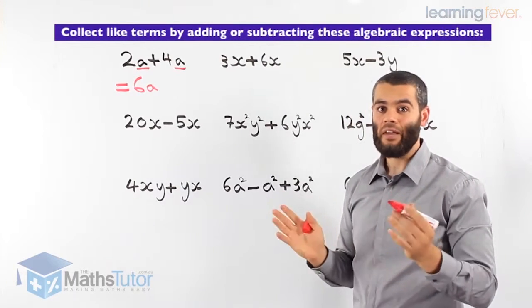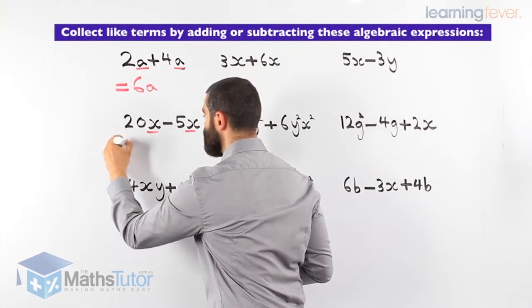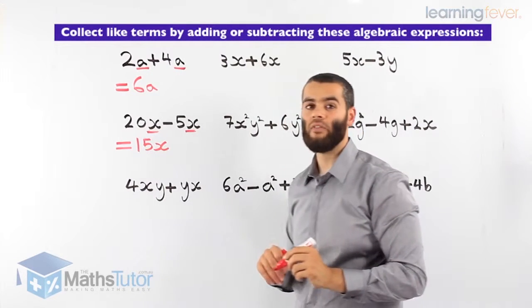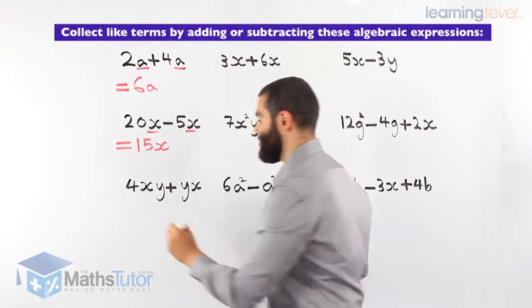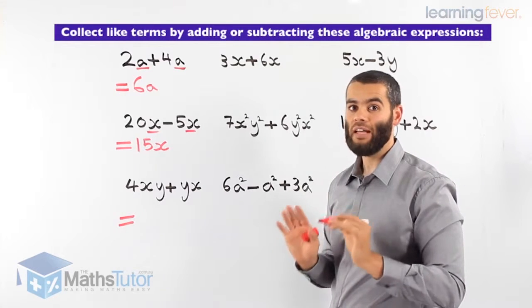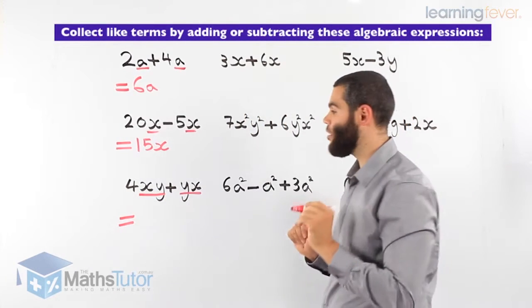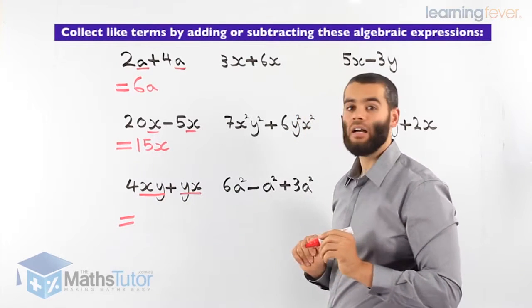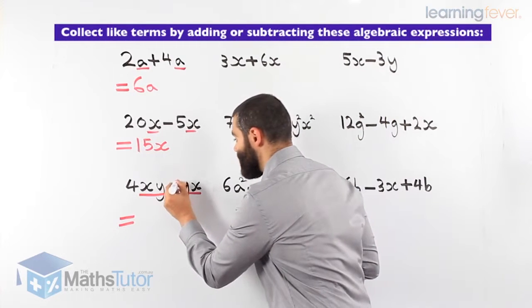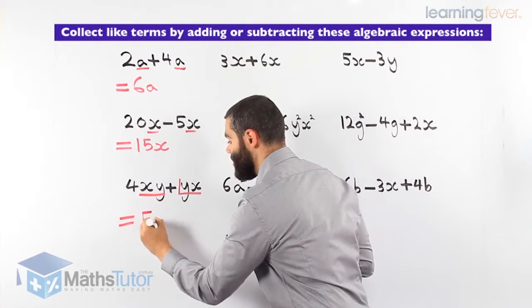20x take away 5x. Are they like terms? We have an x here and an x there, so yes, they are like terms. 20 take away 5 is 15x. Next, 4xy plus yx. Are they like terms? xy and yx — yes, the order doesn't matter as long as the pronumerals are the same. Now there is an invisible 1 in front of yx, so 4 plus 1 equals 5xy.